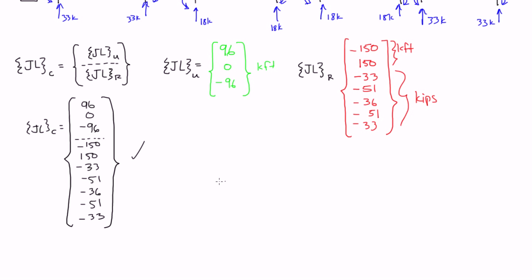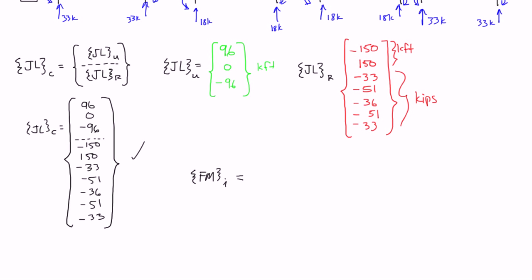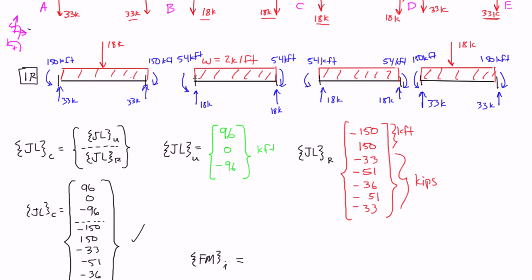The fixed moment matrix — Fm — written as a column vector with squiggly brackets, is going to be equal to your end reactions, or your internal end reactions, on the internal reaction diagram. So, this second diagram that we came up with.